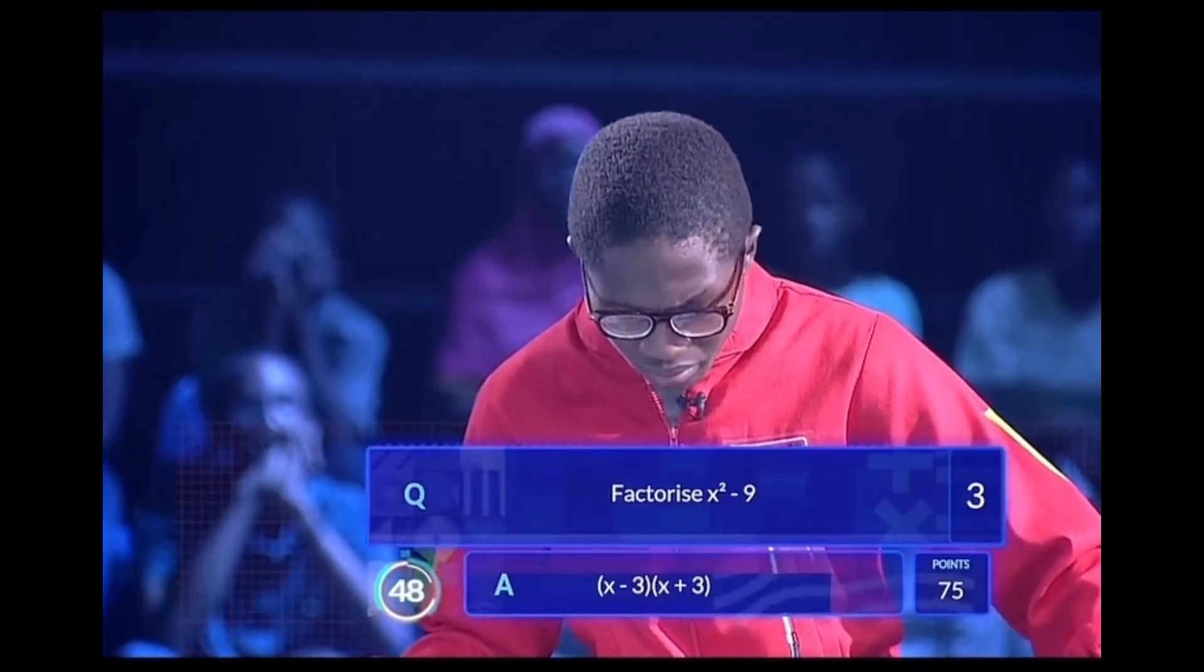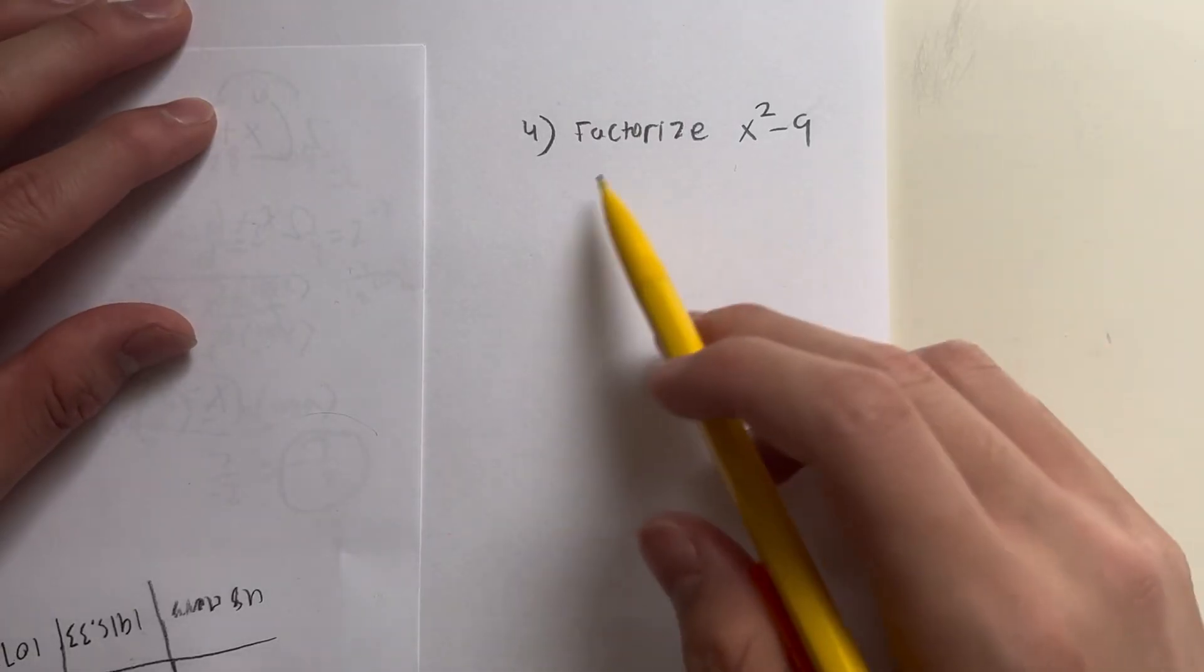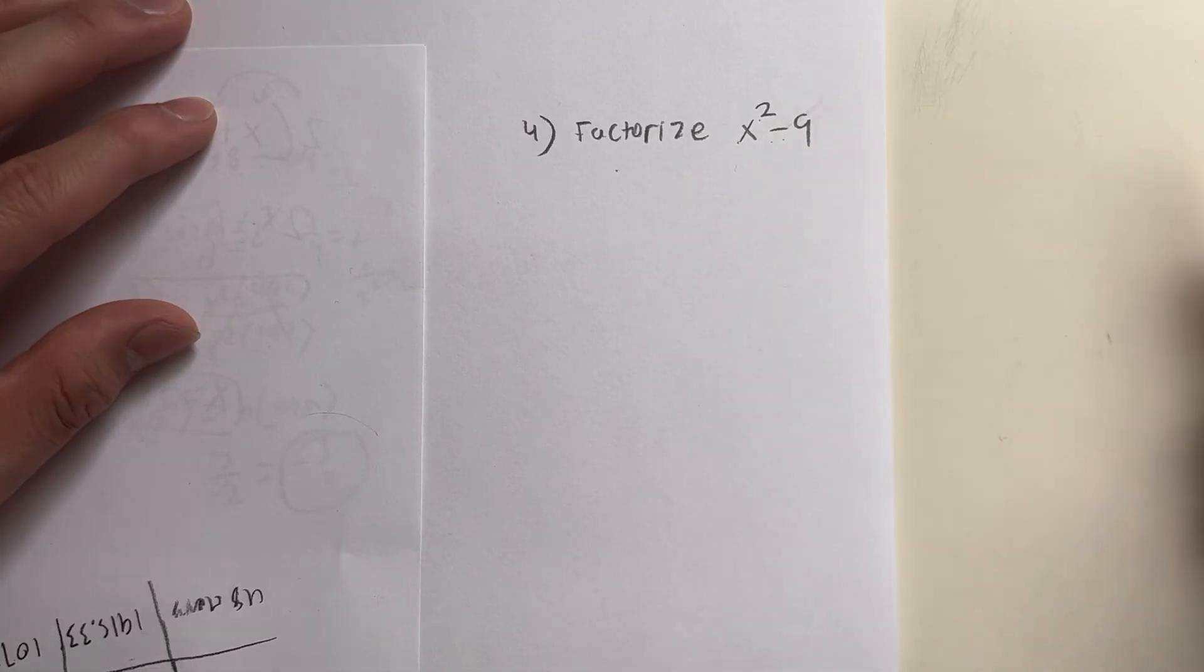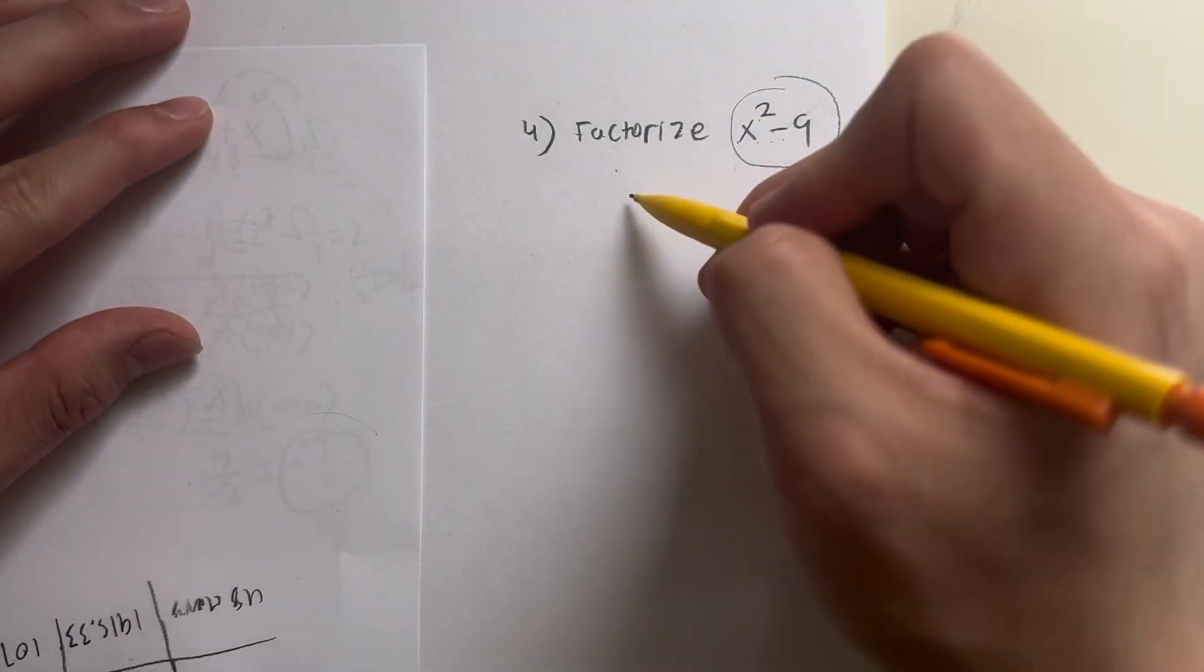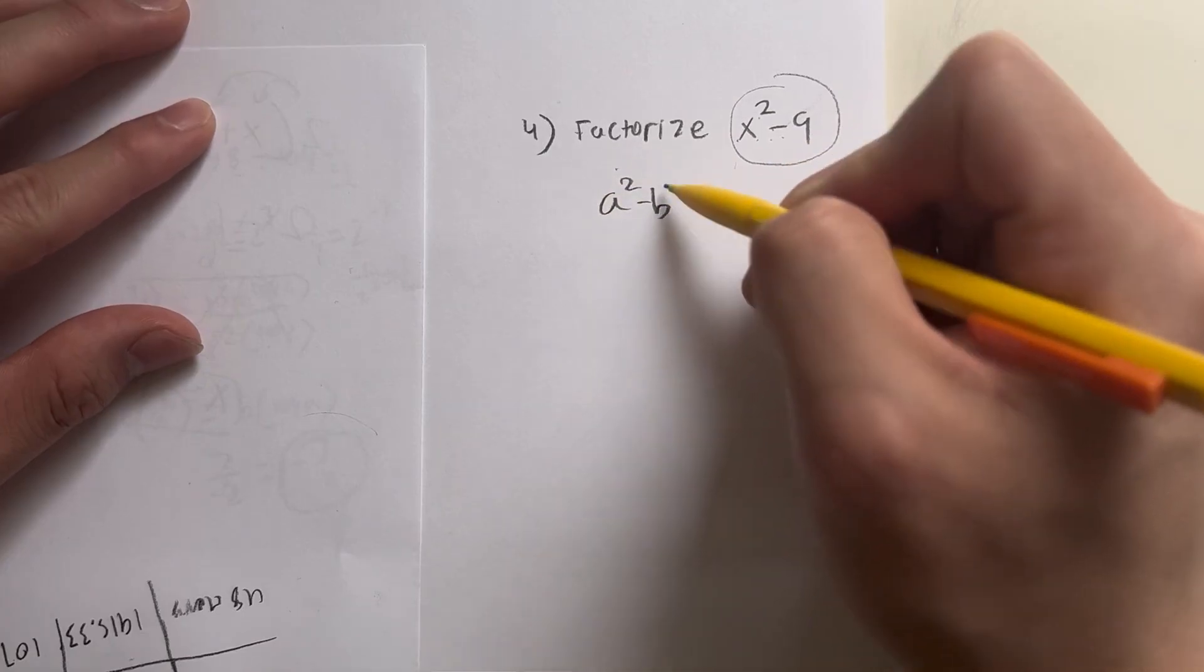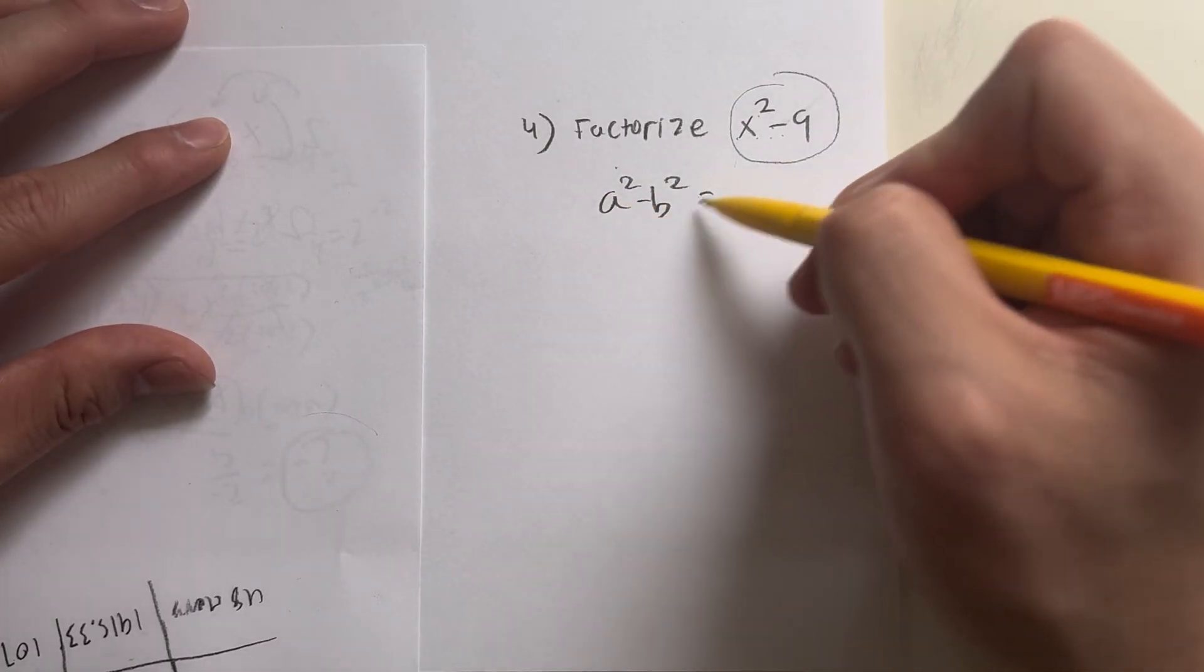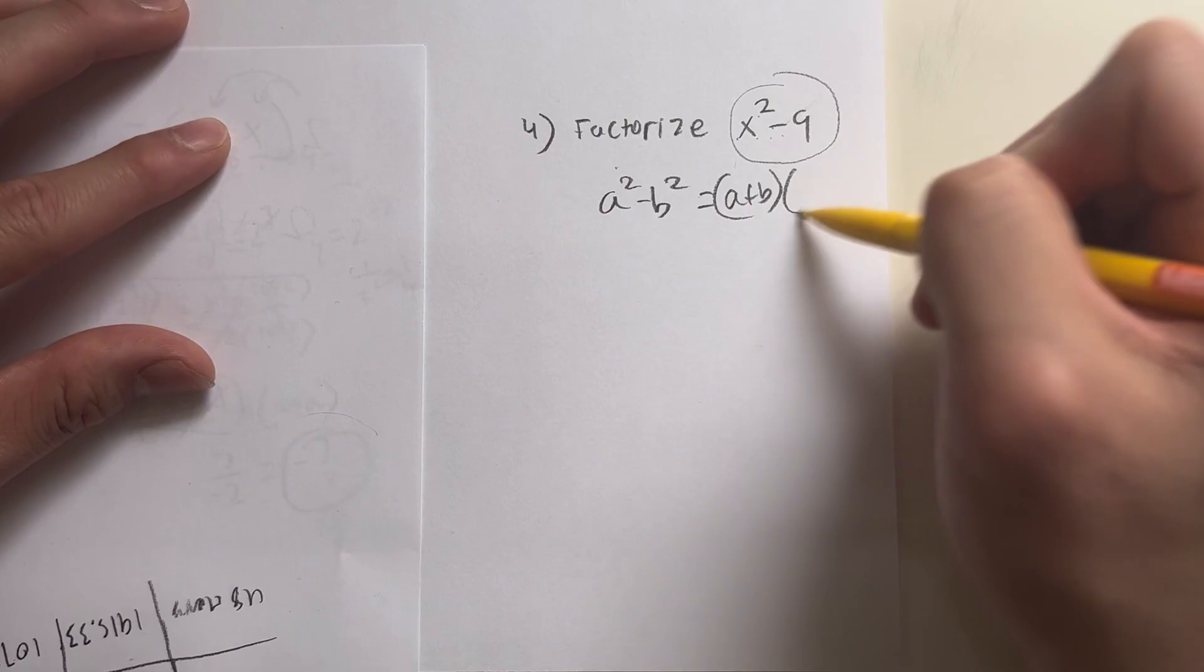Factorize x squared minus 9, correct. Okay, this might be the easiest question, and one you could actually do in your head too. So the question's asking is to factorize x squared minus 9. And the thing is, you have to spot right away, this is known as the difference of squares, a squared minus b squared. And what is this equal to? This is just equal to a plus b times a minus b.